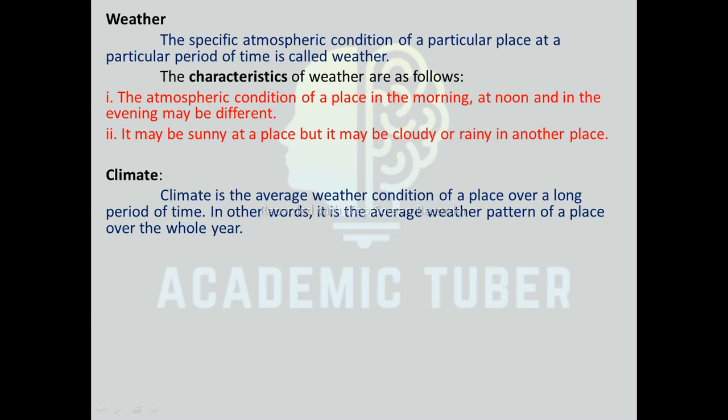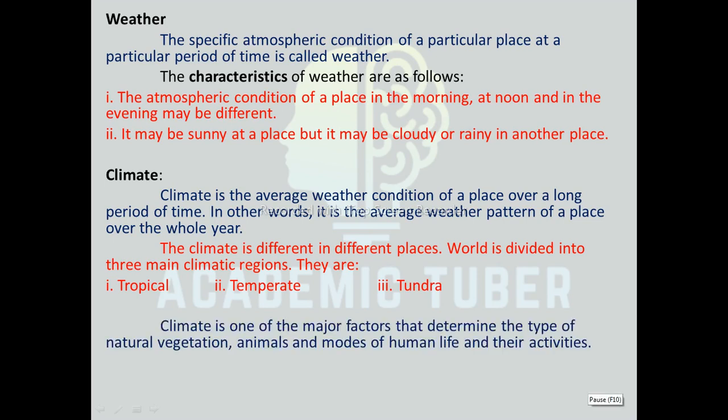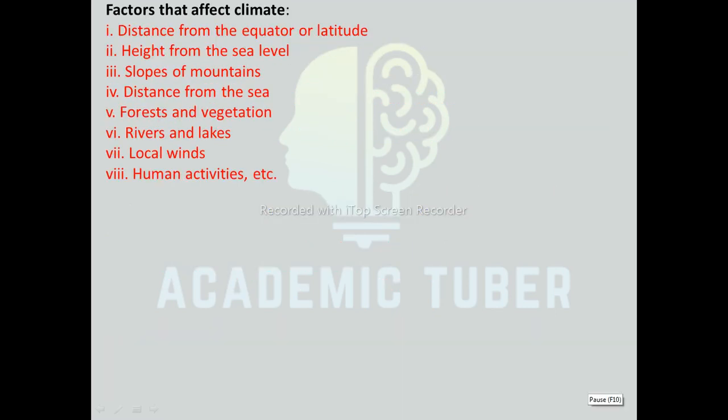The branch of science that deals with the study of climate is known as climatology. The climate is different in different places. The world is divided into three main climatic regions: tropical, temperate, and tundra. Climate is one of the major factors that determines the types of natural vegetation, animals, and modes of human life and their activities. We do not experience similar types of climate at the same place in different parts of the world.